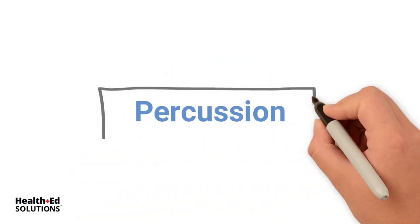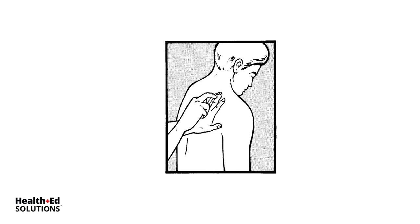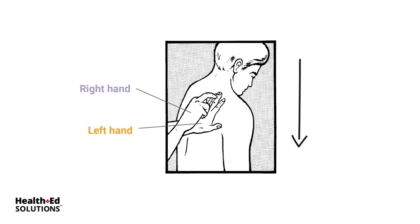Next, percussion — this is probably the least used assessment technique. It is performed on the patient's back in between the scapula and vertebral column on both sides of the spine. You start from the top and work your way down, tapping. You can also do it on the front. I like to use my left hand in contact with the patient and strike it with my right hand when assessing percussion.